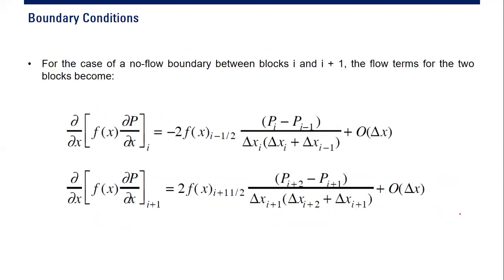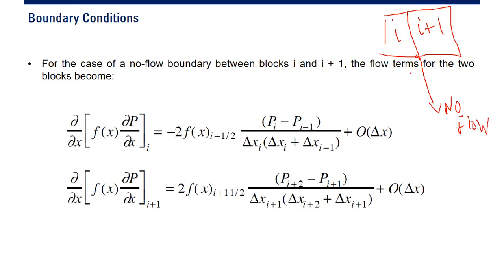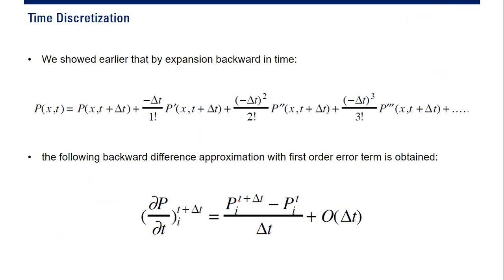For the case of a no-flow boundary between block i and i+1 — for example, a sealing fault — the flow term becomes zero at that face. We consider the approximations at i-1/2 and i+1/2. Now we also showed the backward Taylor series expansion. This brings us to time discretization, as opposed to the spatial discretization we have been discussing.